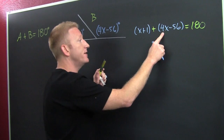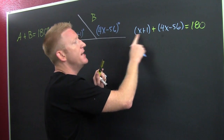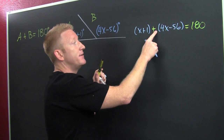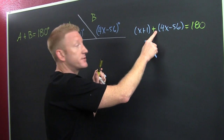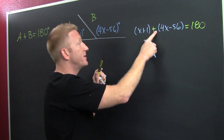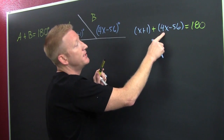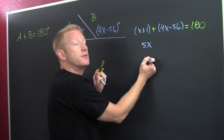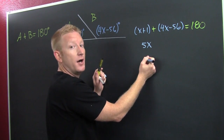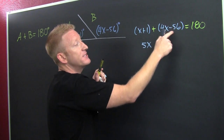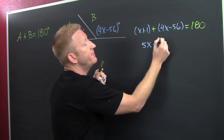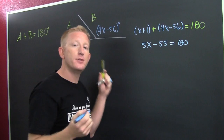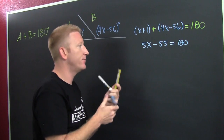We need to gather, collect, and combine like terms. Like terms are terms with exactly the same variables raised to exactly the same powers. These parentheses are unnecessary — there's no number or minus sign in front. So x and 4x give me 5x. Don't forget to also combine constants: 1 minus 56 is negative 55. That's equal to 180.